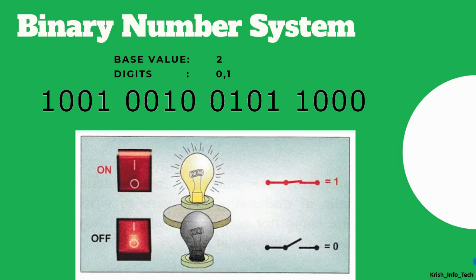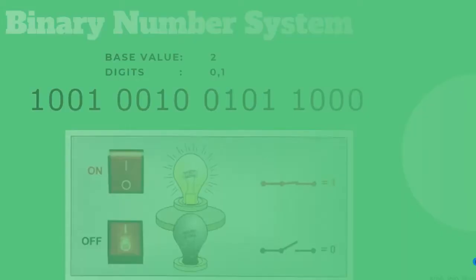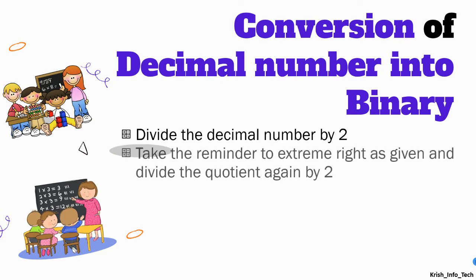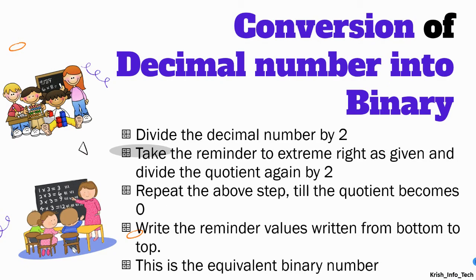These machines work according to the numbers only — 0 or 1. Suppose you increase the speed on the fan regulator, each speed has some combination of 0s and 1s. That will be explained further inside the binary number system. Next, we are going to learn how to convert a decimal number into a binary number.